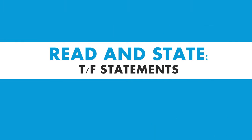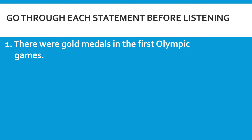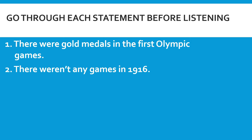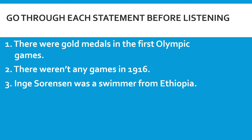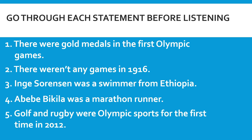Now let's move on to the second activity of our lesson today, which is to read and state whether the statements are true or false. Let's go through each statement. Number one: there were gold medals in the first Olympic Games. Number two: there weren't any games in 1916. Number three: Inger Sorensen was a swimmer from Ethiopia. Number four: Abibi Bikila was a marathon runner. Number five: golf and rugby were Olympic sports for the first time in 2012.